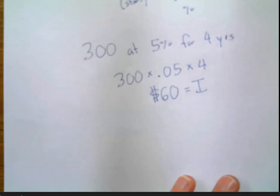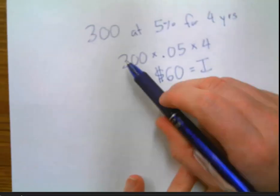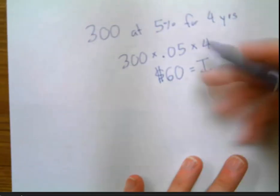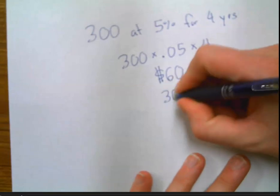And then one step further, if you want us to know the total, you've got the $300 that you initially did, plus the $60, so your total is $360.